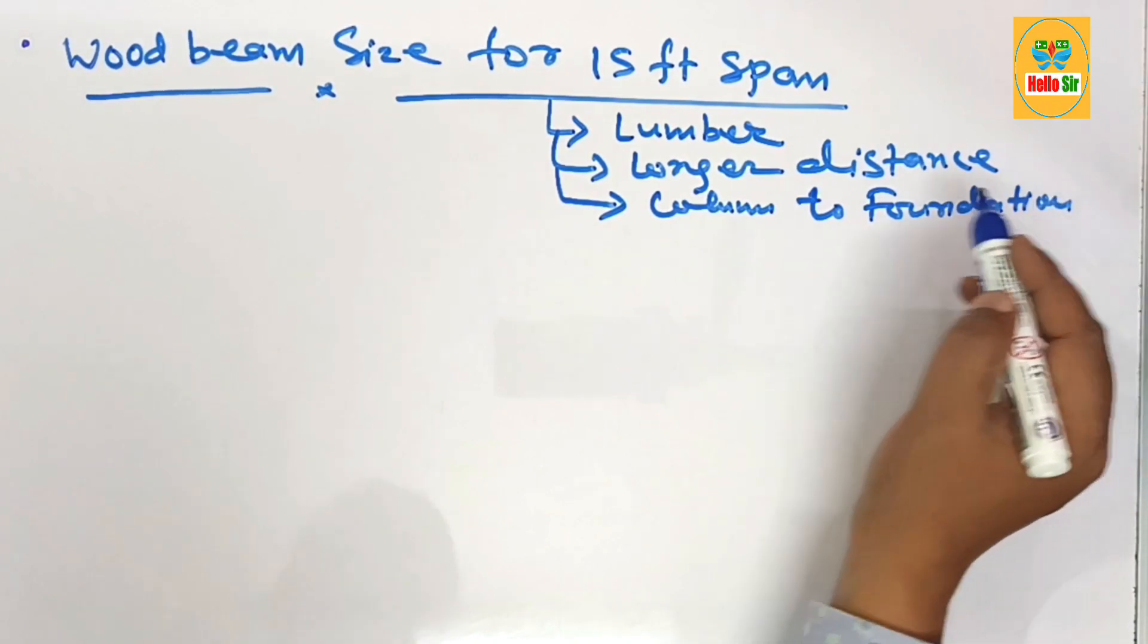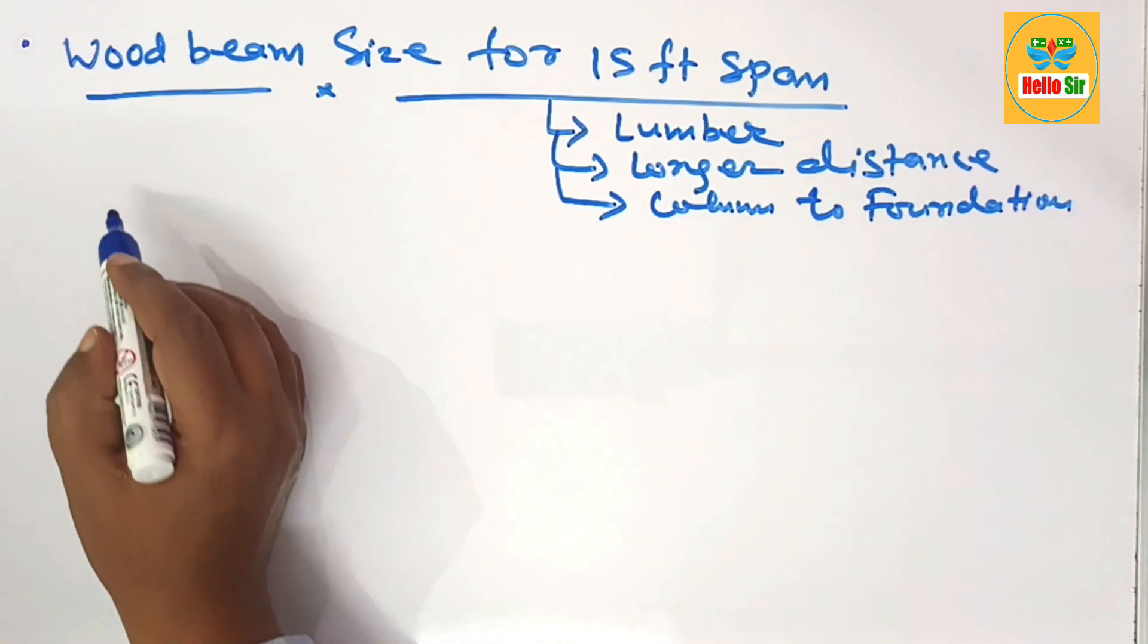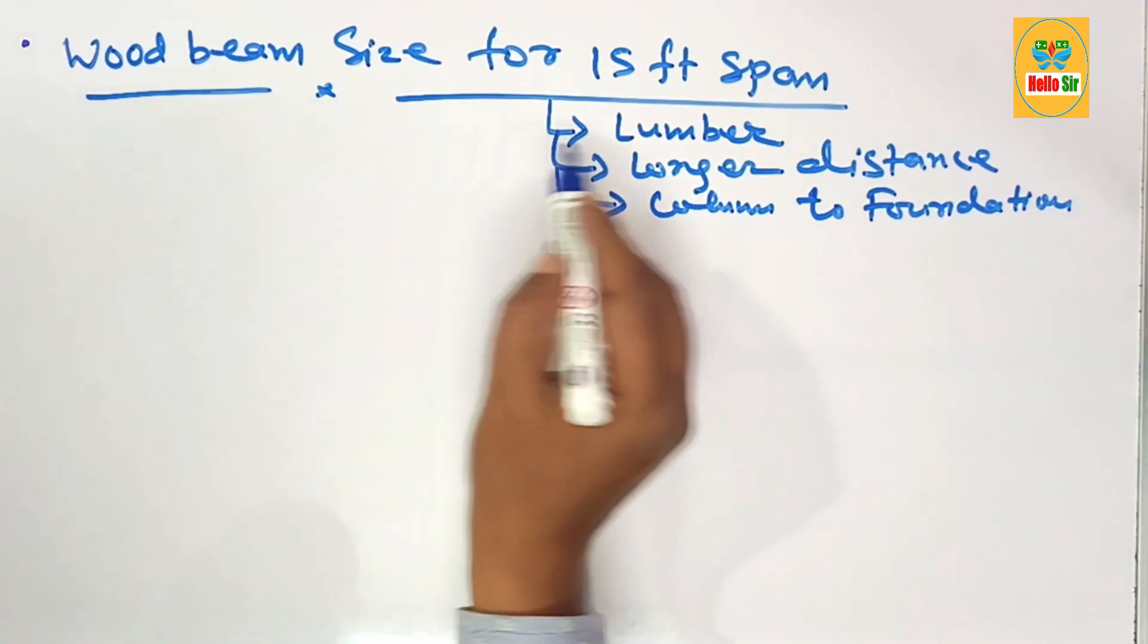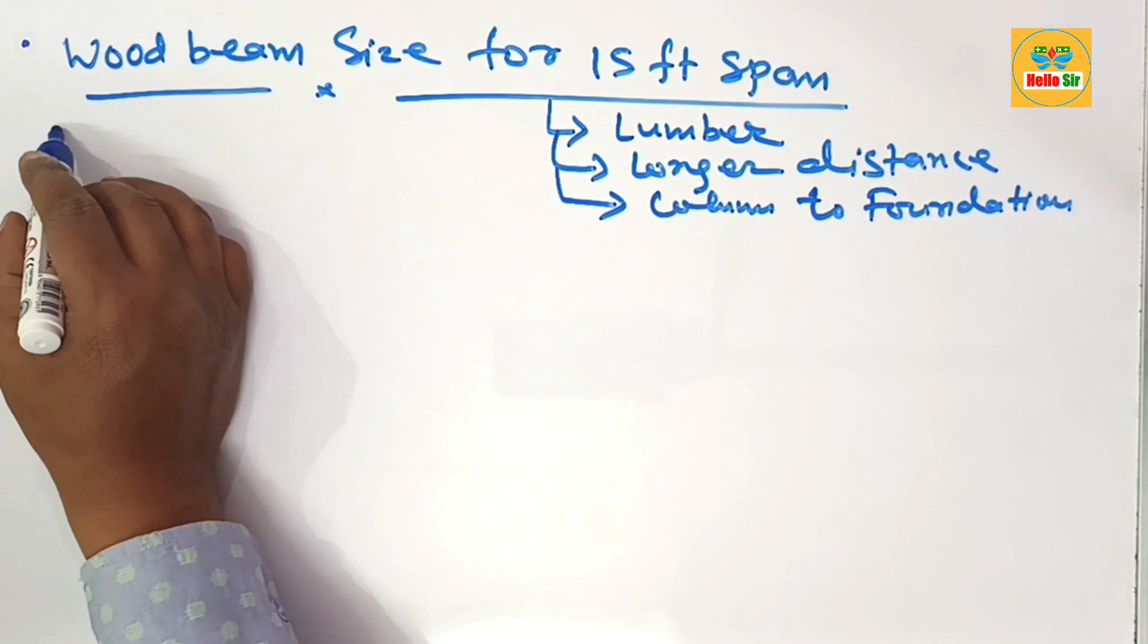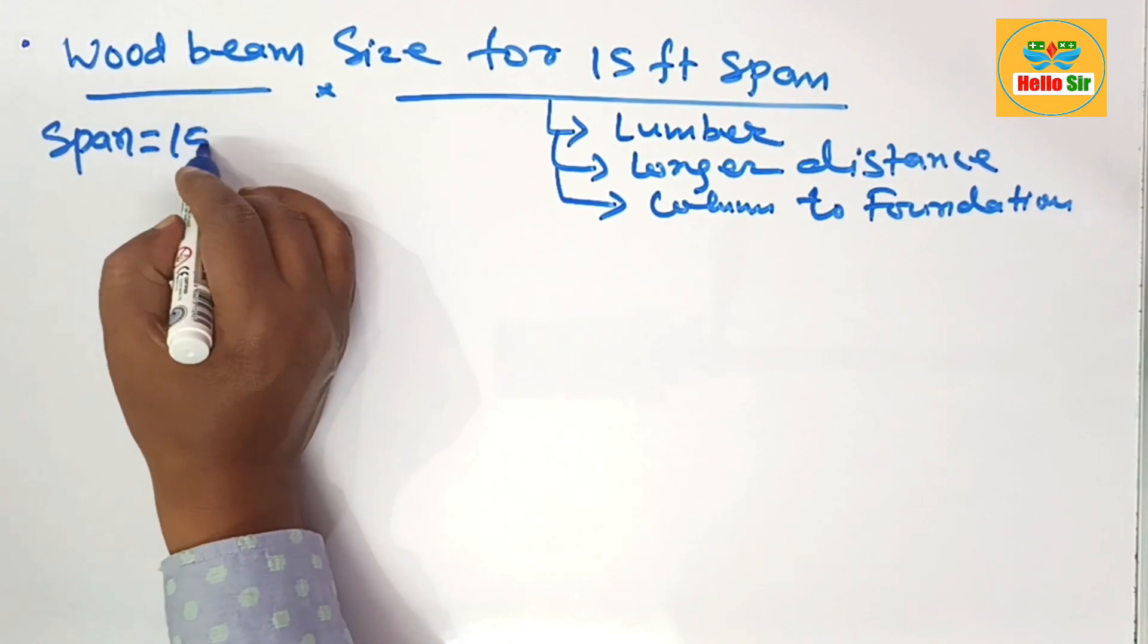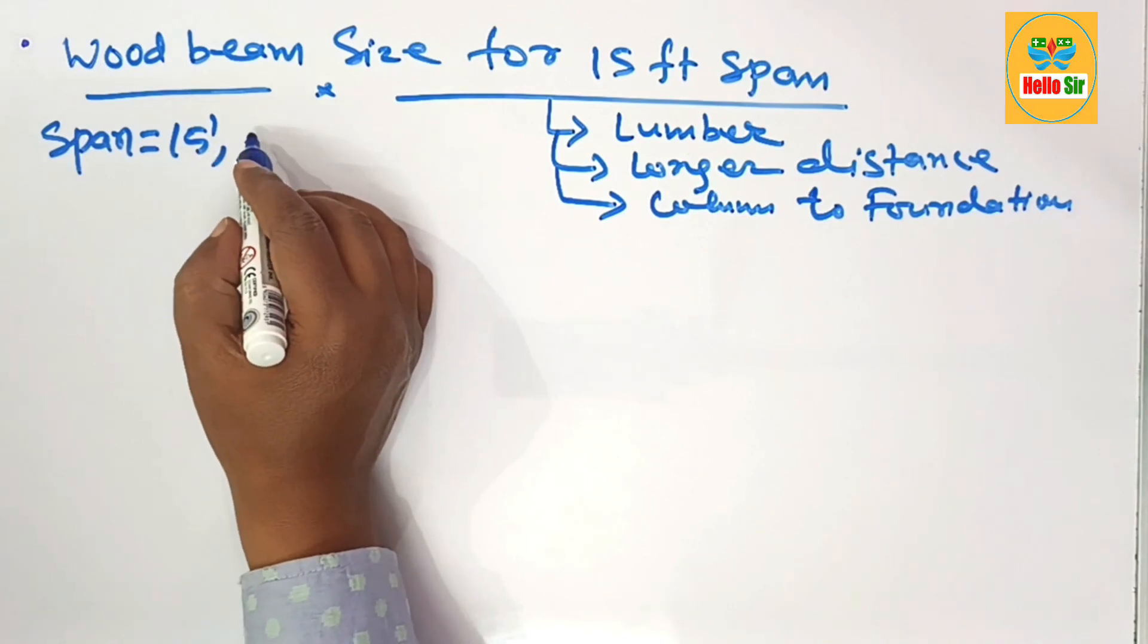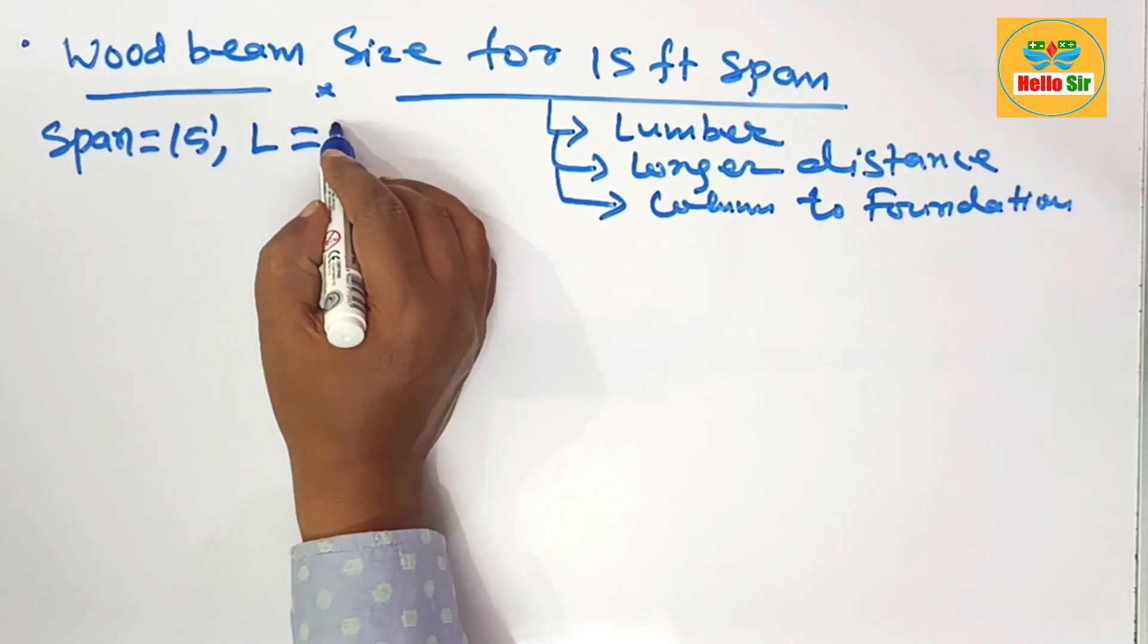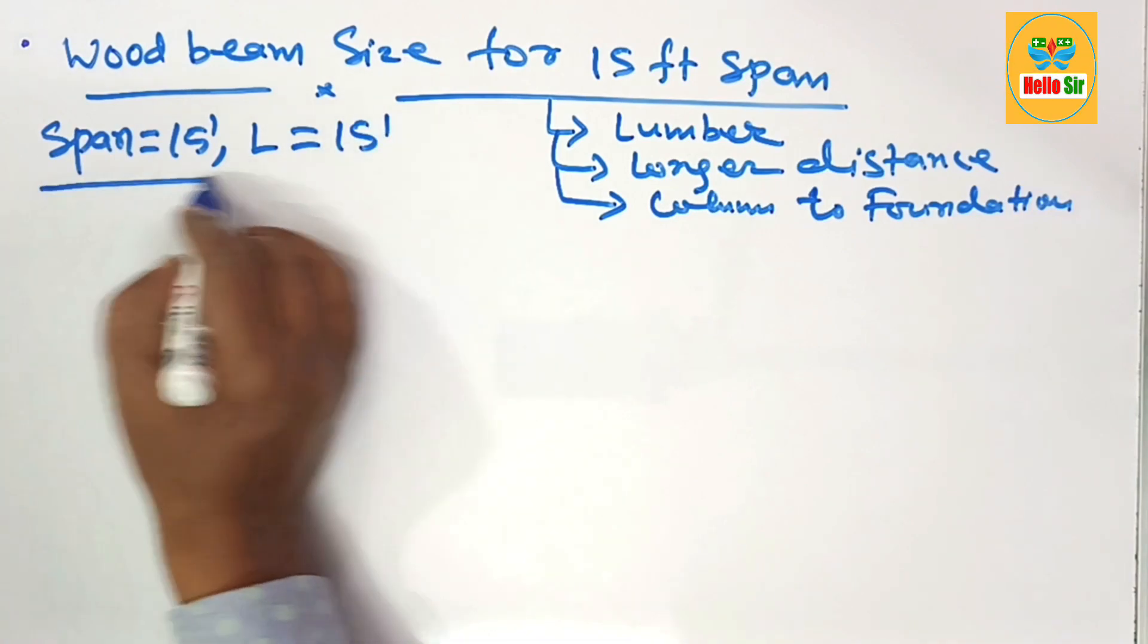Here you have to find out the correct wood beam size for a 15-foot span. You're given the span length is 15 feet, so the required length of wood beam should be 15 feet.